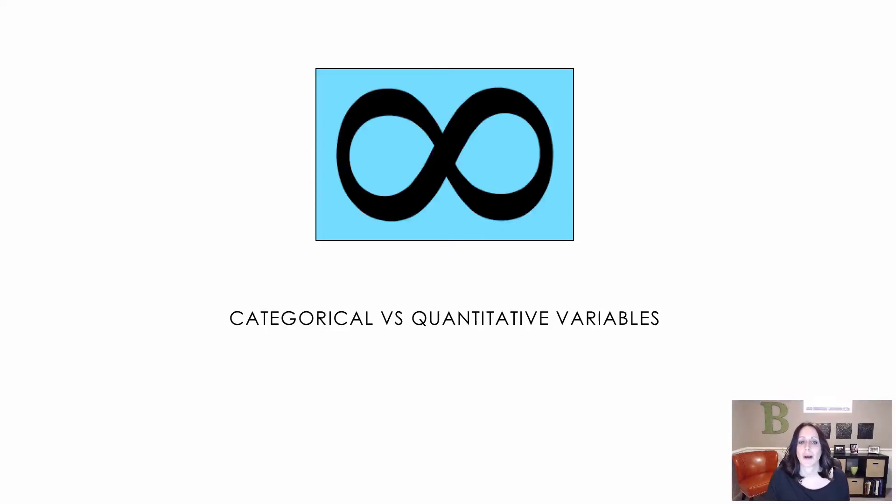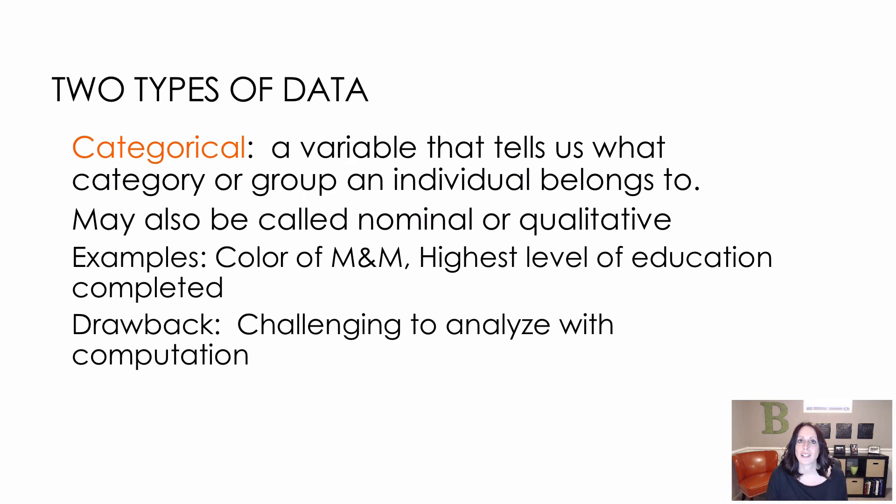In this lesson, we are talking about categorical versus quantitative variables. We talked a little bit in our last video about the difference between the two, but remember that categorical is a variable that tells us which category a group belongs to. It might also be called nominal or qualitative. If you see those words or hear those words, they're really just talking about categorical data.